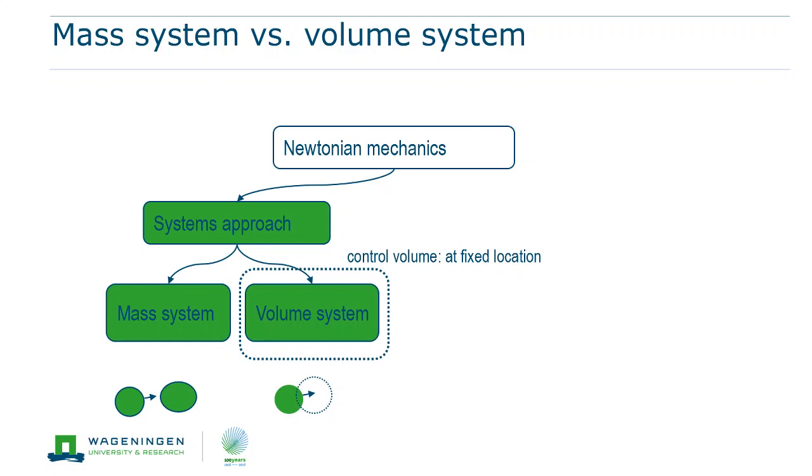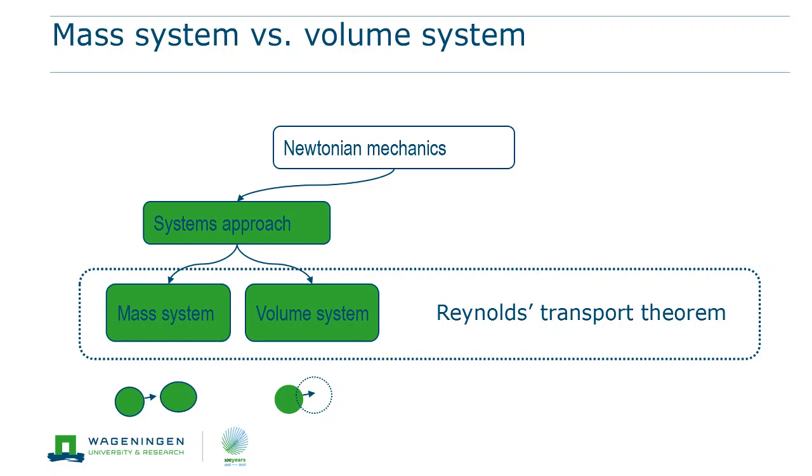So there is one remaining step to find out how we can make the relation between physics in the mass system and the physics in the volume system. The final answer will be the Reynolds transport theorem.